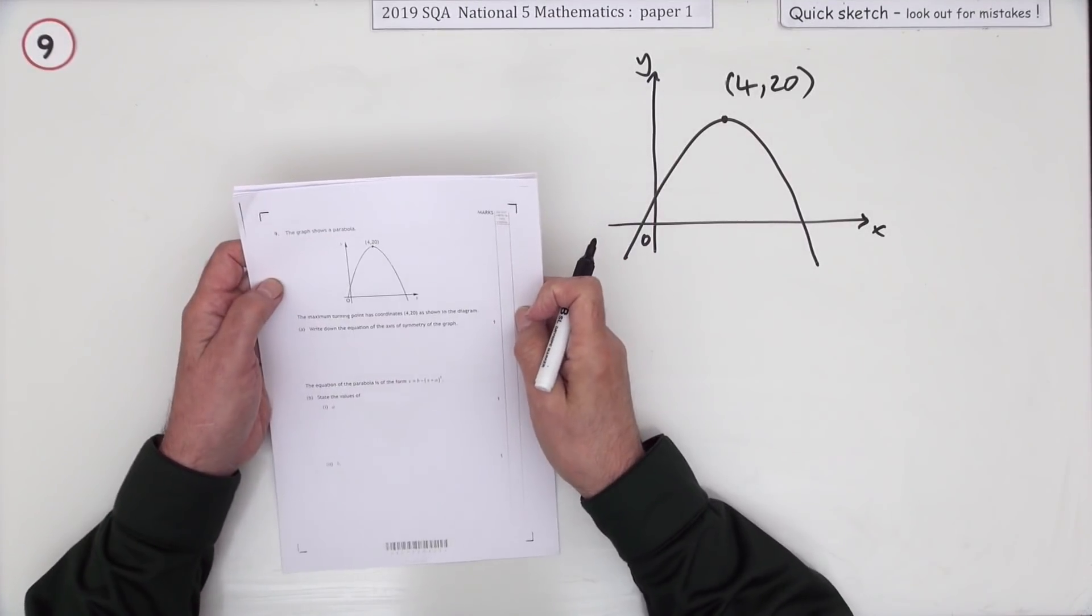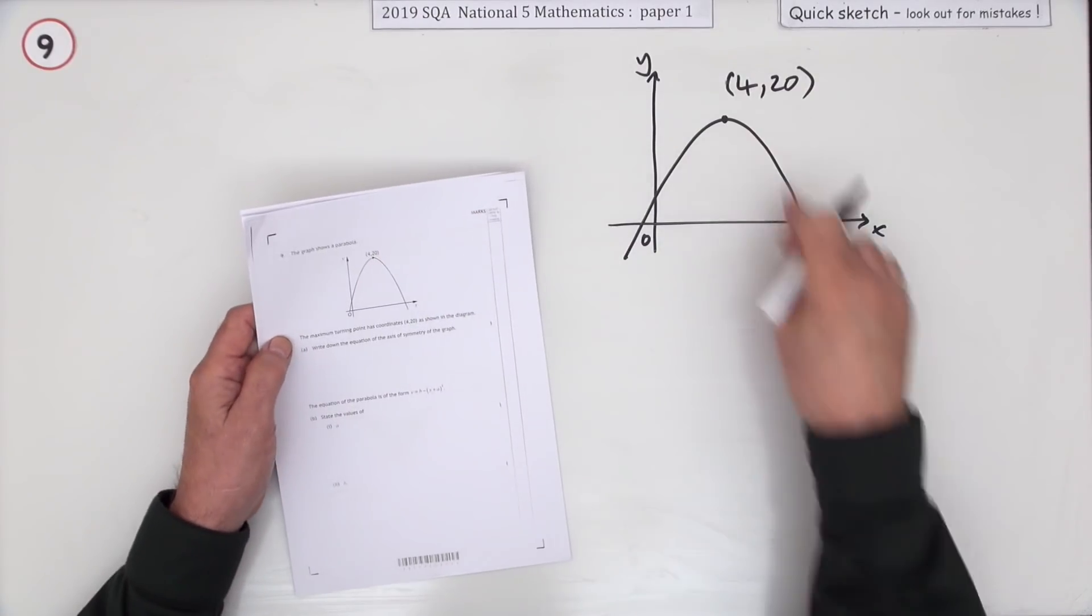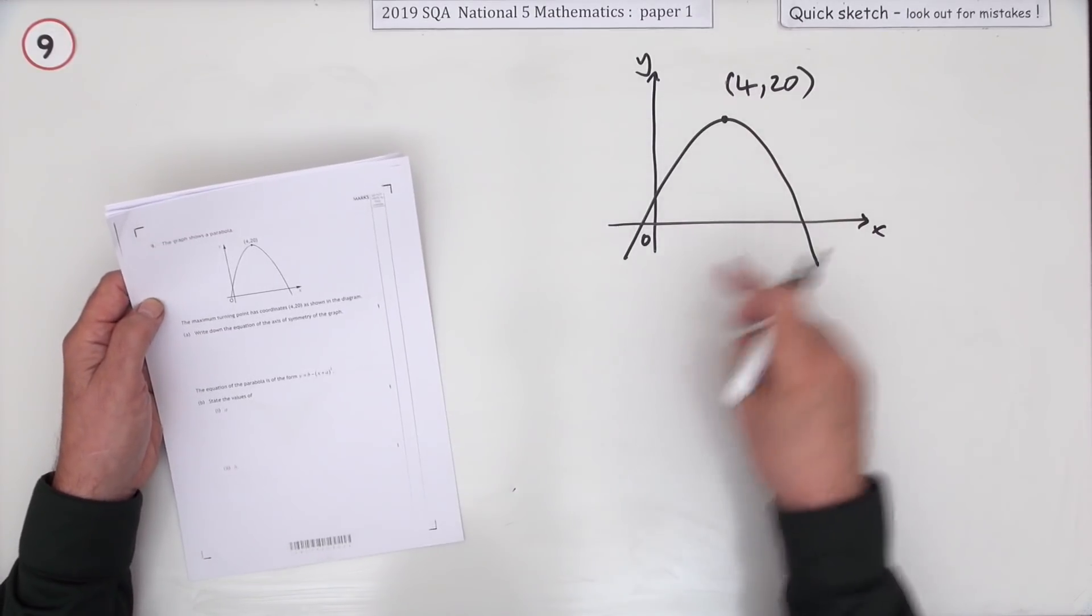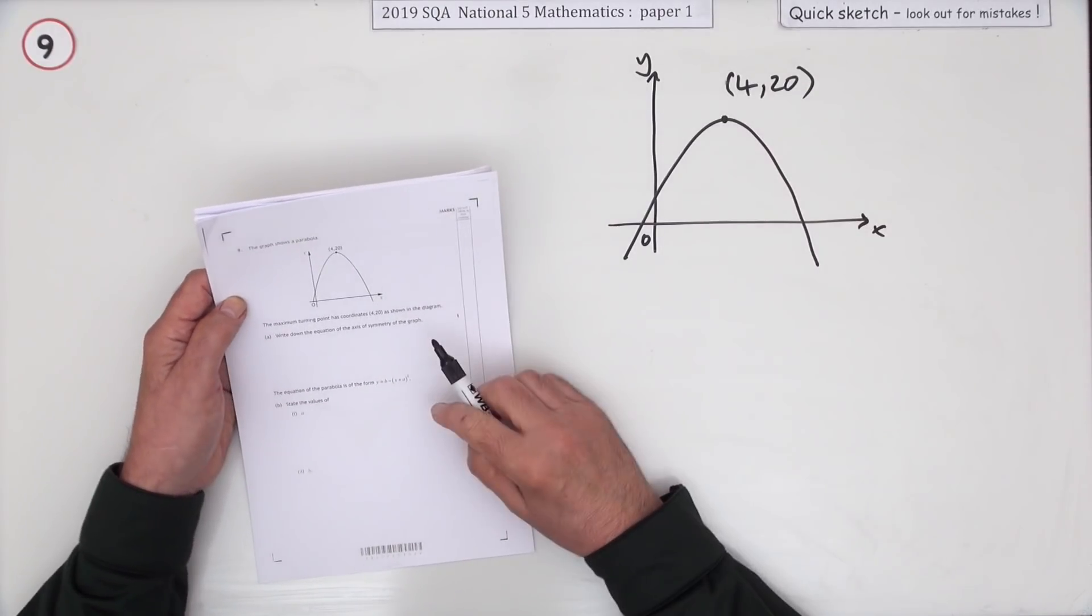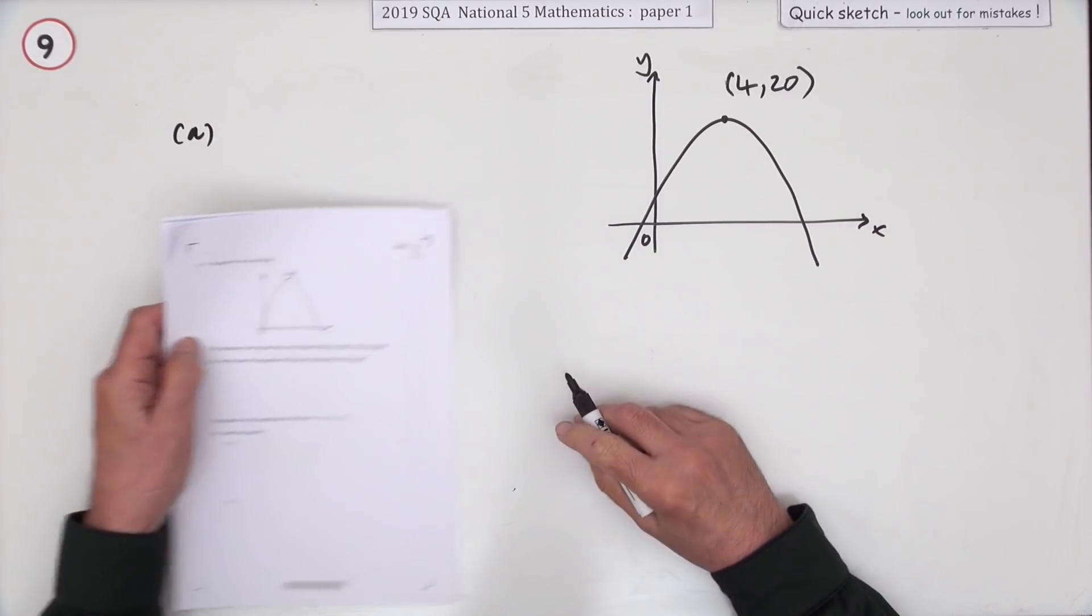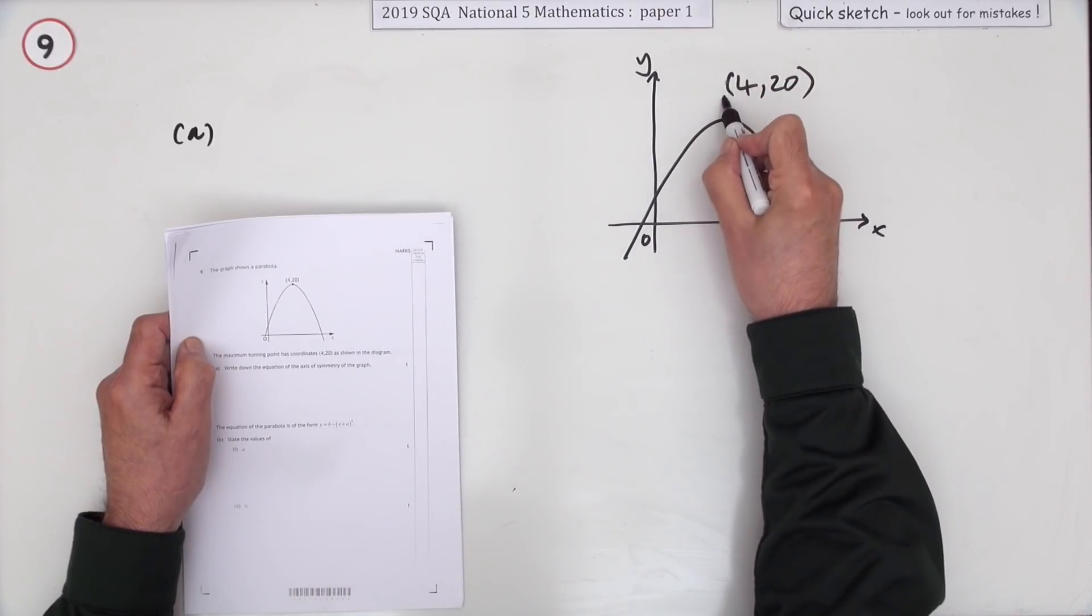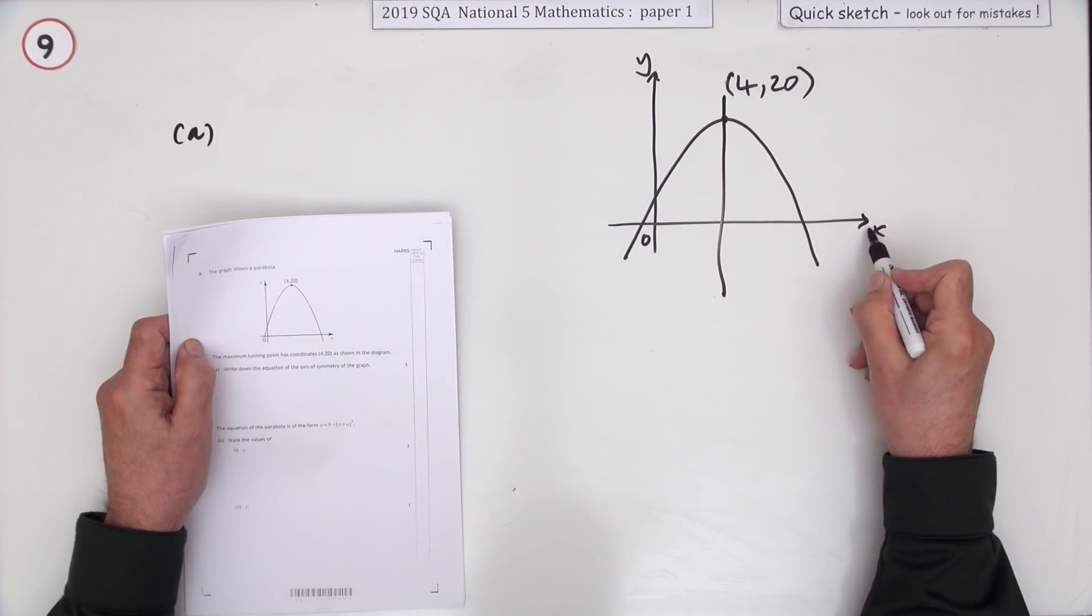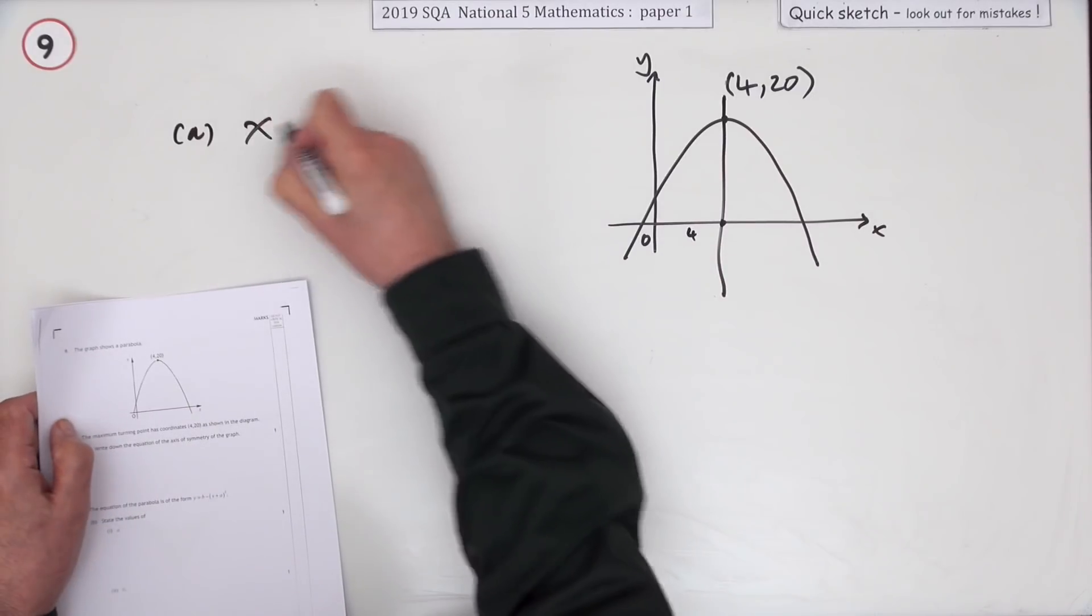Number nine from paper one of the 2019 National 5 Maths. A wee upside down parabola here - shows its turning point at the top is (4, 20). It wants you to first of all write down the equation of the axis of symmetry. Well, it's symmetrical that way. The axis of symmetry comes down here.